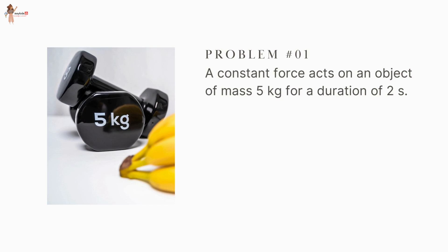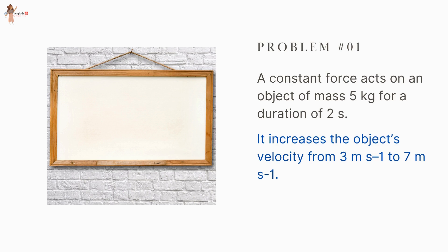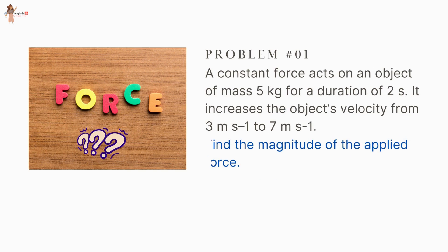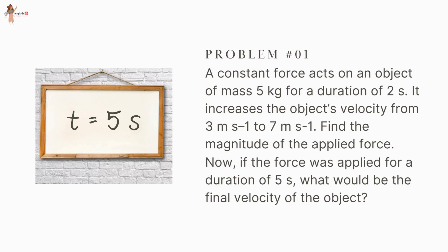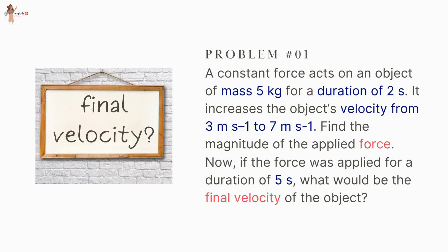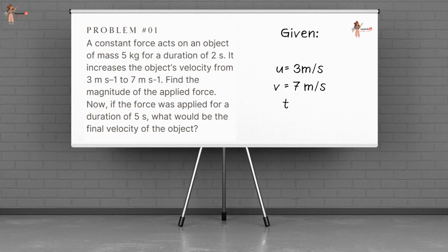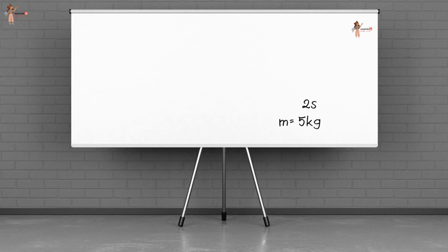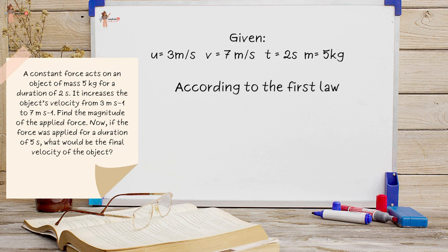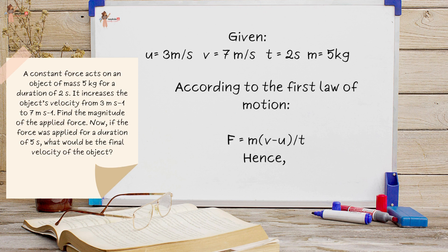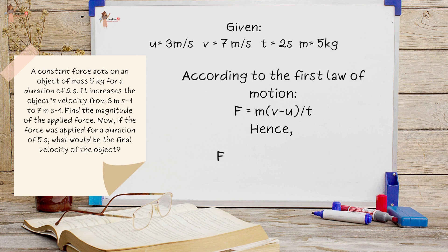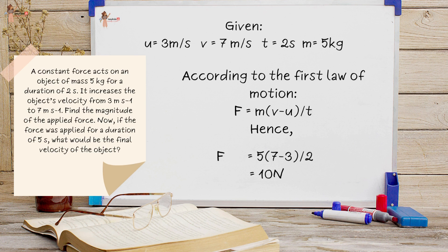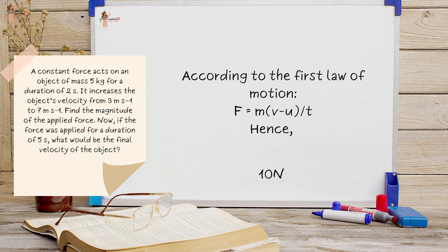Numerical problem: A constant force acts on an object of mass 5 kg for a duration of 2 seconds. It increases the object's velocity from 3 m/s to 7 m/s. Find the magnitude of the applied force. Given: u = 3 m/s, v = 7 m/s, t = 2 s, m = 5 kg. Using F = m(v − u)/t: F = 5 × (7 − 3)/2 = 10 newtons.